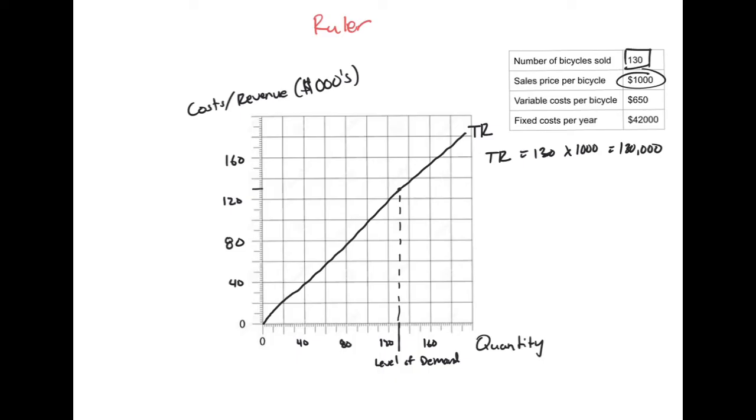Next, I'm going to put my fixed costs. Fixed costs are given to you. It's $42,000. So I can go ahead and add that. $42,000 is going to be close to here, and just go straight across. Again, I should be using a ruler, I am not, but I have that. Now I have my fixed costs.